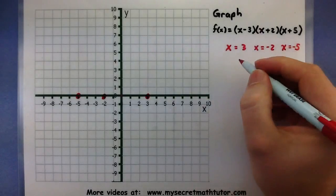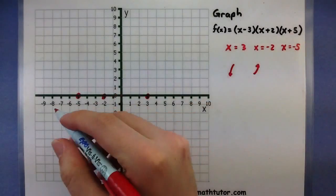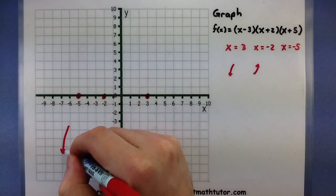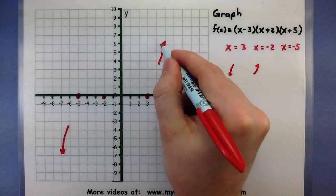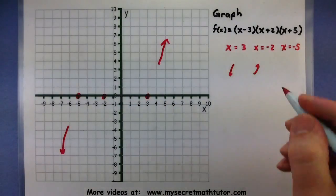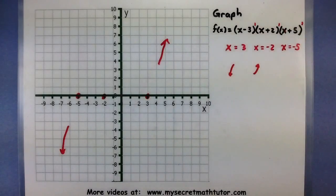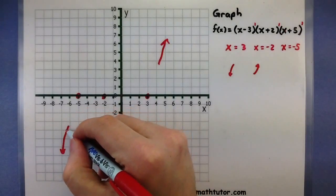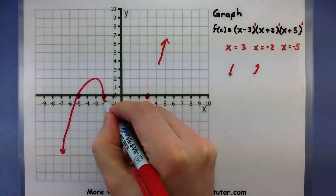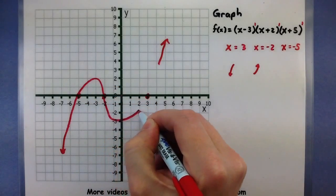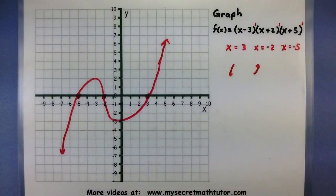Alright, from the end behavior, I know that I have one facing down and one facing up. So something like that. And since each of the powers on the factors are odd, it will go through each of these points. So through negative 5, through negative 2, through 3, reach my other end behavior.